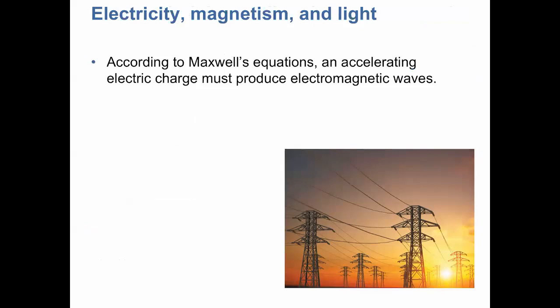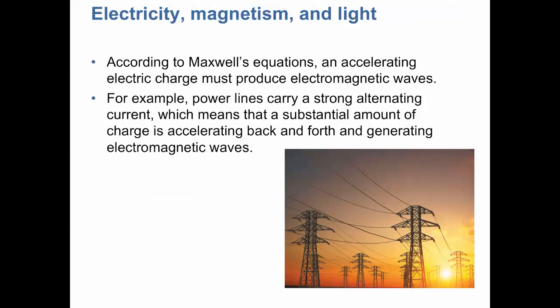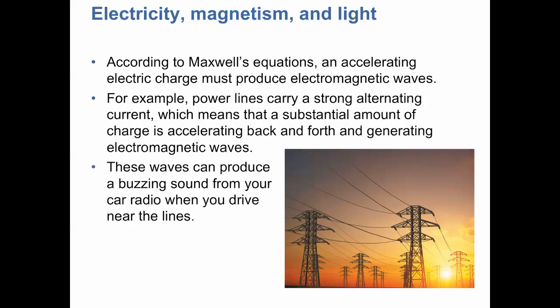According to Maxwell's equations, an accelerating electric charge must produce electromagnetic waves. For example, power lines carry a strong alternating current. Most of the electricity we use in our household is not DC but AC — batteries are DC, but household electricity runs on alternating current. So a substantial amount of charge is accelerating back and forth, generating electromagnetic waves. These waves can produce a buzzing sound from your car radio when you drive nearby those lines.